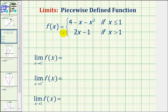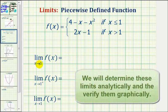We want to use the given piecewise defined function to determine the following limits. We first have the limit as x approaches one from the left of f of x.